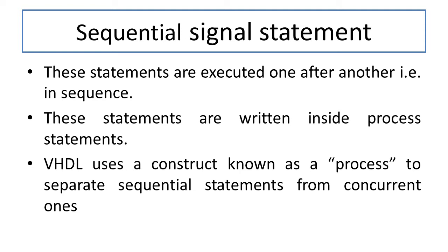How can we declare sequential statements? The statements are written inside the process statement. In a process, we generally define the formal parameter list including the input terms. Statements written inside the architecture within a process statement are called sequential statements. VHDL uses the process construct to separate sequential statements from concurrent statements.